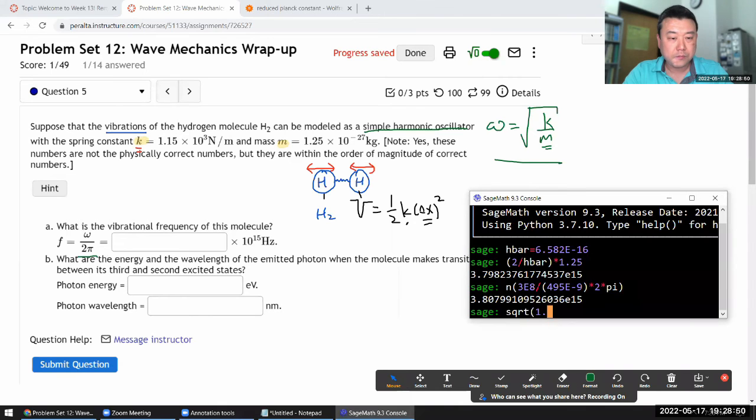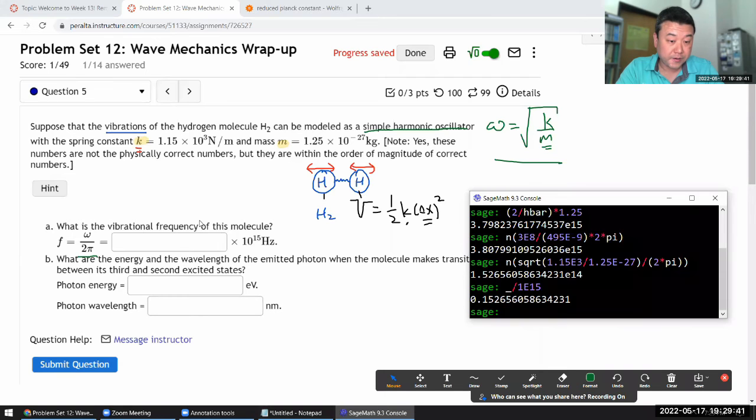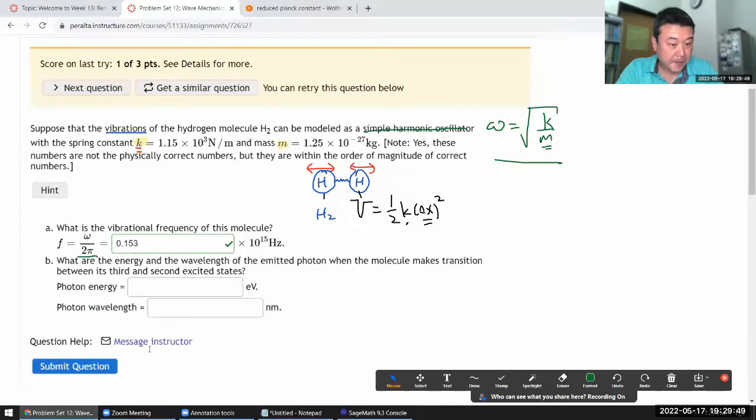That's what the question is suggesting that I do. So let me calculate square root of 1.15 times 10 to the power of 3 newton per meter. I'm just double checking that these are all in basic SI units and I'm going to trust that the units work out as long as I plug in the numbers in the basic SI units. Divide by 1.25 times 10 to the power of minus 27. Okay that's my omega and I need to divide that by 2 pi to get the frequency, 2 times pi. And I need to put this through decimal approximation process. Okay 1.53 times 10 to the power of 15. So I'm going to divide this by 10 to the power of 15 so that I can get the mantissa here what goes in. It's 0.153, so 0.153 times 10 to the power of 15.